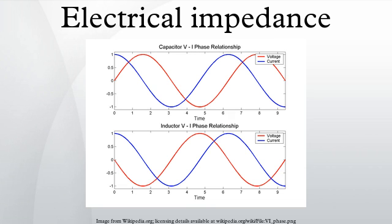Capacitive reactance: a capacitor has a purely reactive impedance which is inversely proportional to the signal frequency. A capacitor consists of two conductors separated by an insulator, also known as a dielectric. At low frequencies a capacitor is open circuit, as no charge flows in the dielectric. A DC voltage applied across a capacitor causes charge to accumulate on one side; the electric field due to the accumulated charge is the source of the opposition to the current. When driven by an AC supply, a capacitor will only accumulate a limited amount of charge before the potential difference changes sign and the charge dissipates. The higher the frequency, the less charge will accumulate and the smaller the opposition to the current.